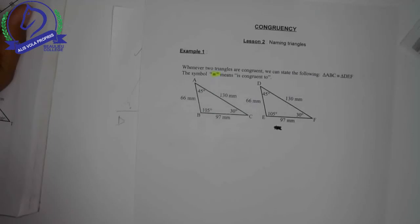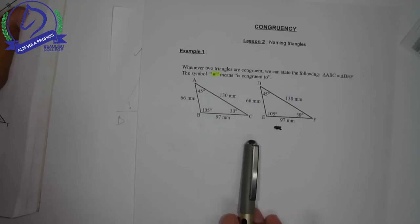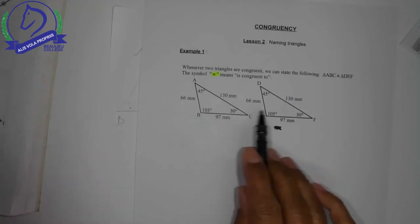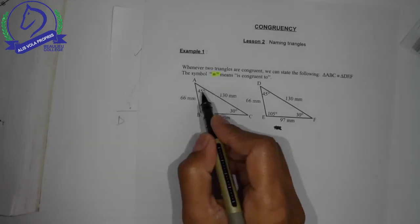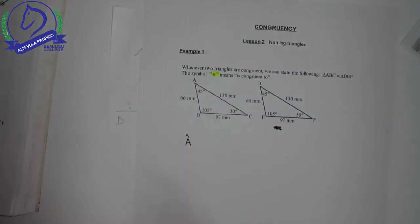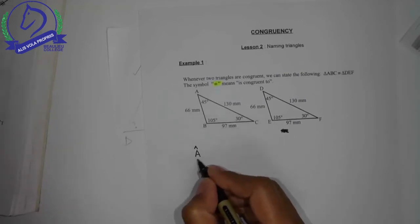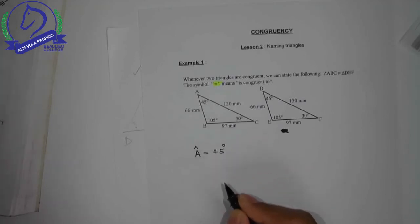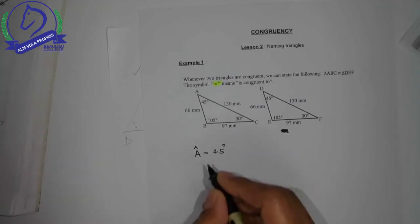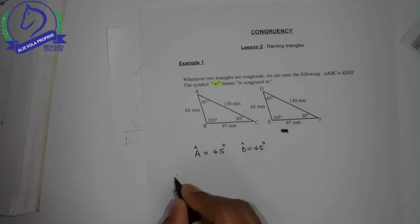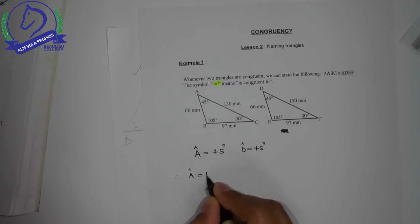Now the naming of triangles in terms of their corresponding equal angles is important when using congruency notation. So let's write down what we see here. 45 and 45 - so that means angle A is equal to 45 degrees. Remember, to represent an angle it's a capital letter with the upside down V. Angle D is equal to 45 degrees.